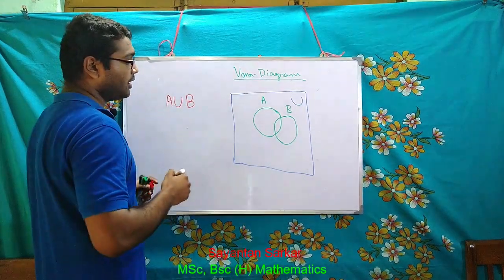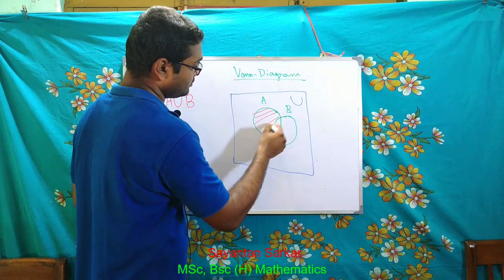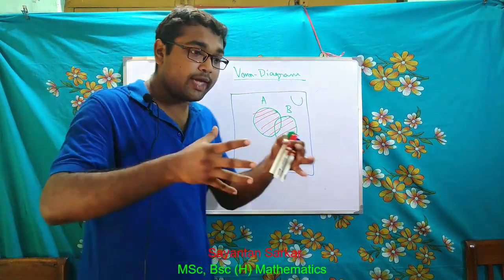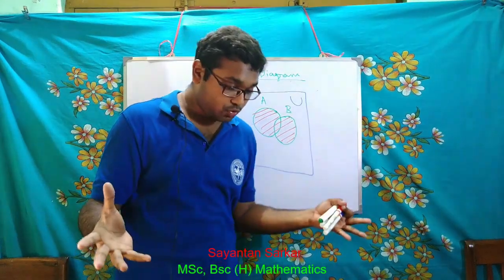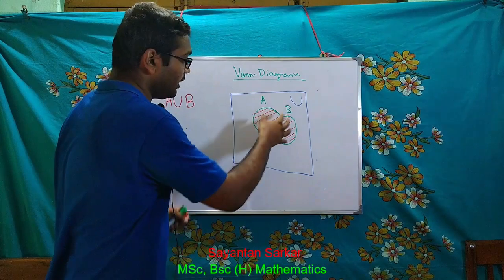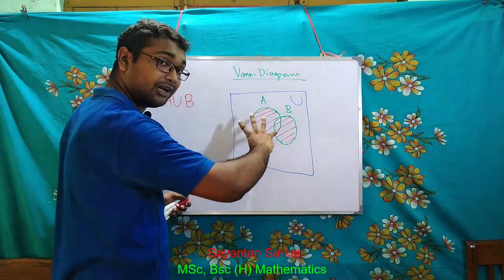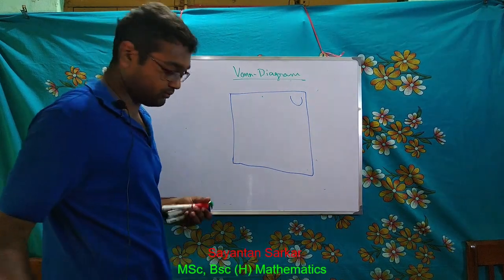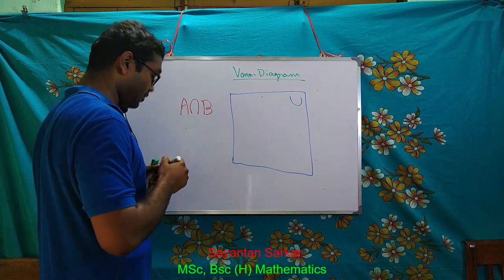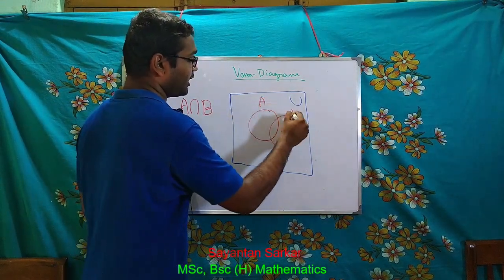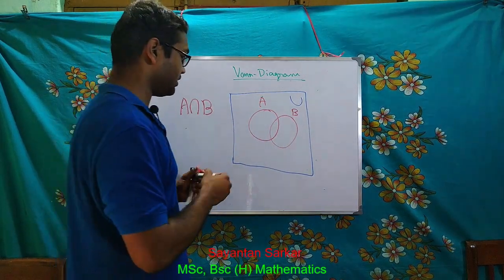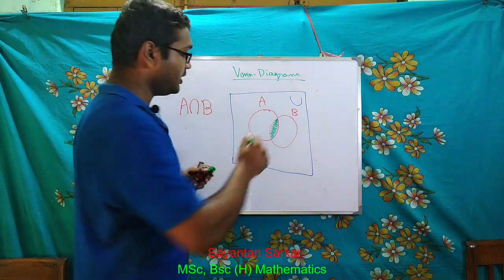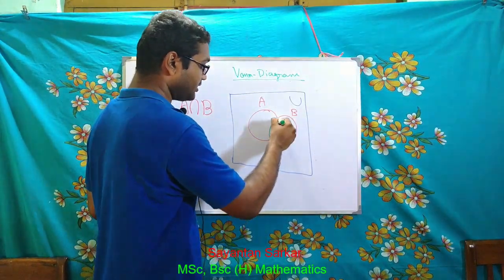From this diagram, I shall represent several set operations. A union B is represented by the entire region of both sets — A union B is the collection of all points of A and B combined in one place. A intersection B is represented by the overlapping region — that common portion between A and B.